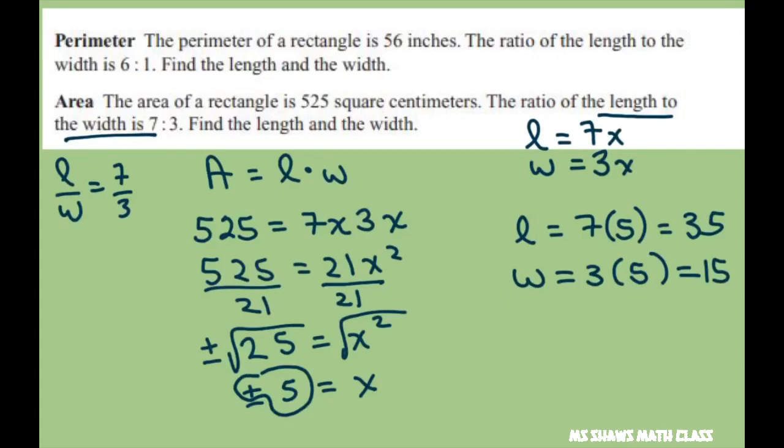So if you did area equals 35 times 15, you would get 525, so that shows our answer is correct.